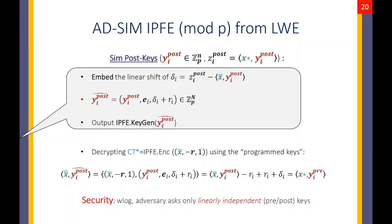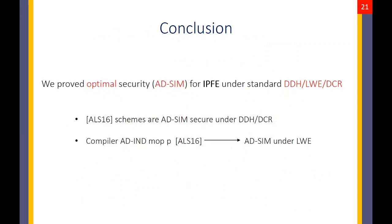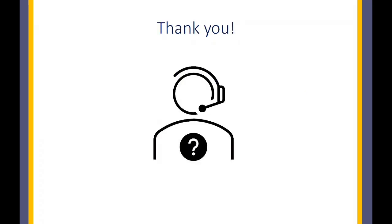In conclusion, we proved optimal security for inner product functional encryption schemes under standard assumptions like DDH, LWE, and DCR. We achieved this by giving new proofs for the ALS16 schemes and by providing a generic compiler that takes any adaptively indistinguishable scheme and transforms it into an adaptive simulation secure scheme. Thank you.